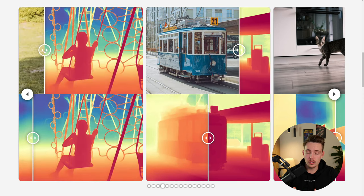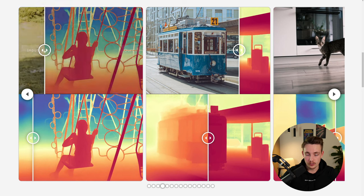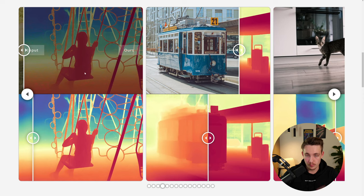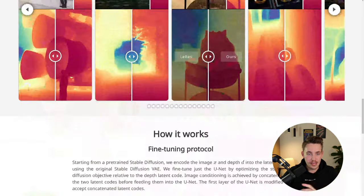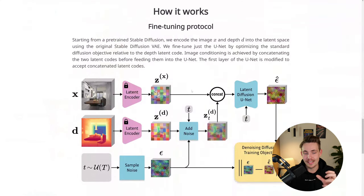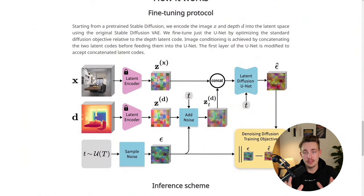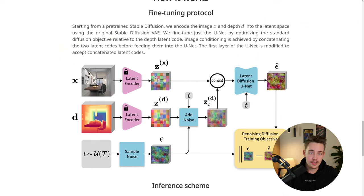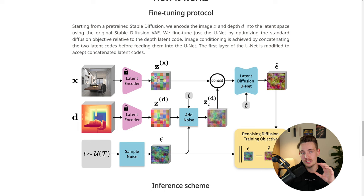The warmer the colors are, the closer the objects are to the camera. Red colors are closer, blue colors are further away. If we scroll down, we can see how the fine-tuning works. It uses a latent encoder — the exact same encoder for getting into latent space — to encode both the image and the depth map using the variational autoencoder, exact same one as Stable Diffusion. That's why we can get these really high-detail depth maps.